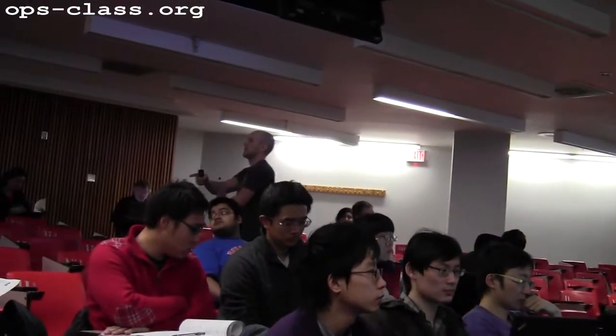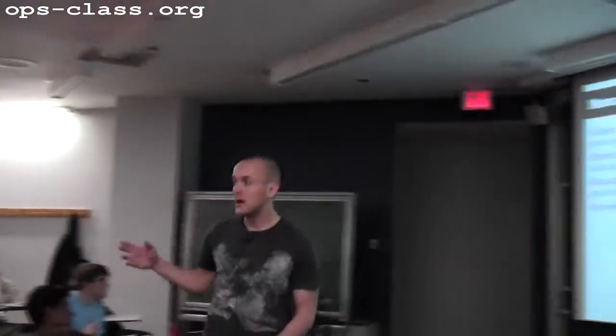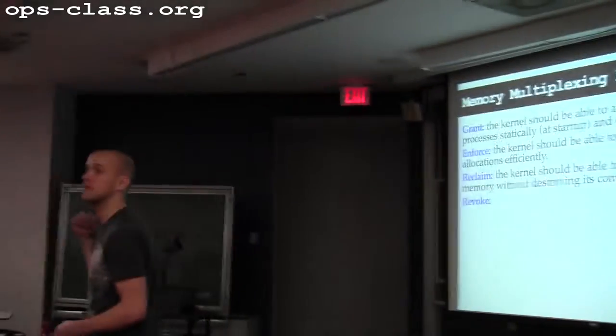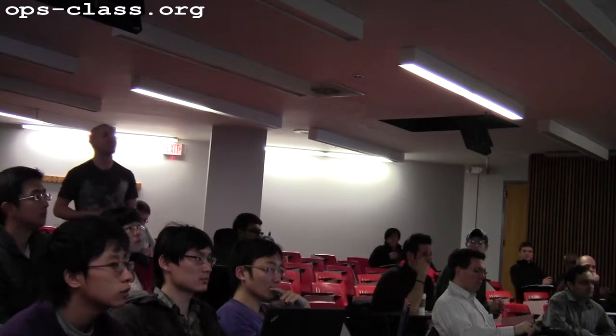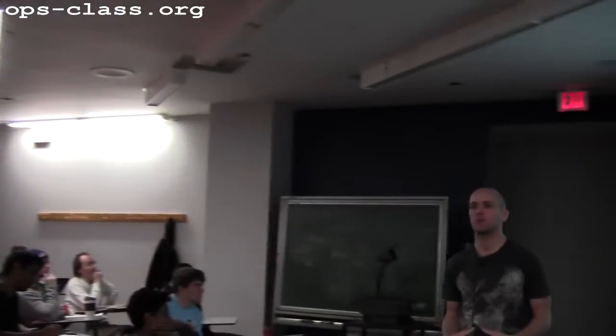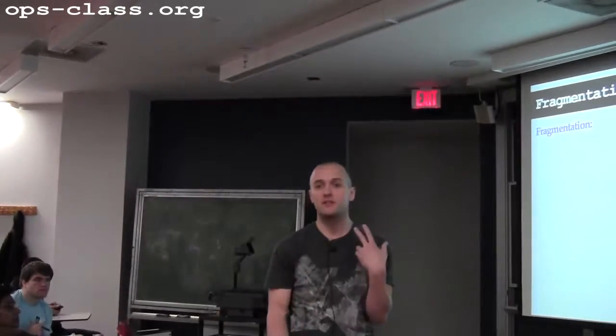Third, reclaim — when I'm finished with memory, I want to be able to take it back. That's revocation. But also, when memory is not in use, I should be able to take it away from a process seamlessly, allocate it to another process without destroying the contents. Fourth, revocation — if a process stops using memory, I should be able to make sure it doesn't touch that memory again.